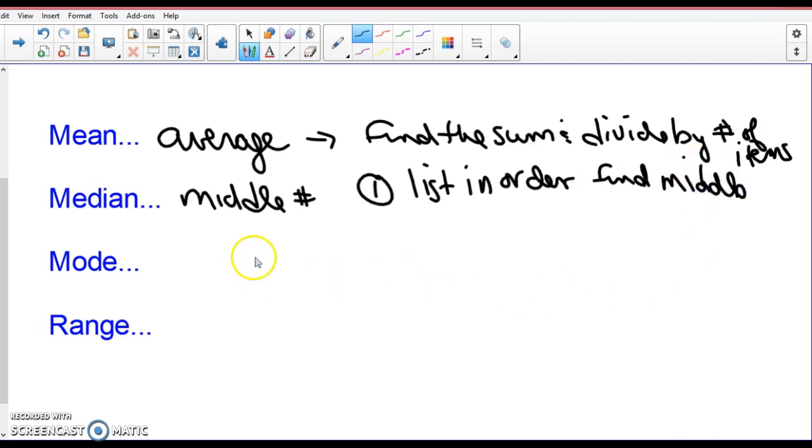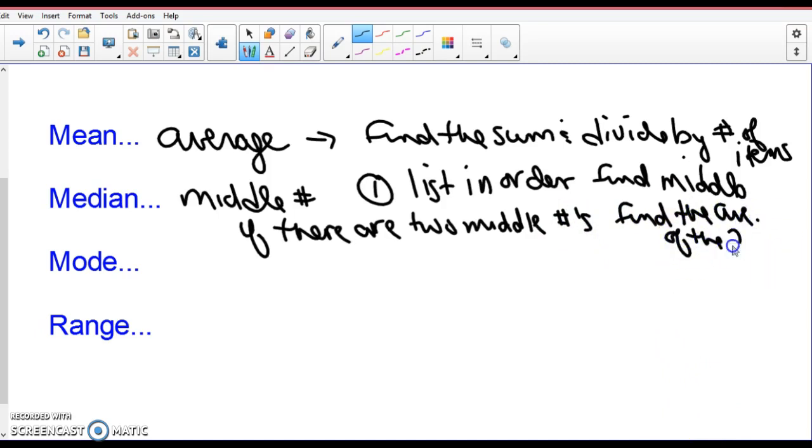If there are two middle numbers, find the average of the two.